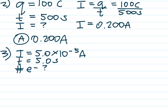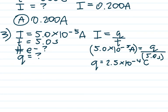Number 3 is also a current question. They tell us the current is 5 times 10 to the negative 5 amps and the time is 5 seconds, but they want to know how many electrons that is. When they ask for the number of electrons or charges, they're really asking for charge Q. Using I equals Q over T, I put in the current and time, cross multiply, and solve for Q — getting 2.5 times 10 to the negative 4 Coulombs.